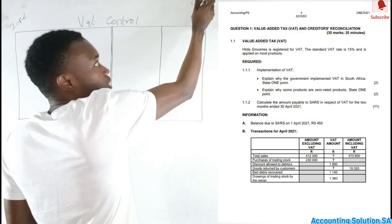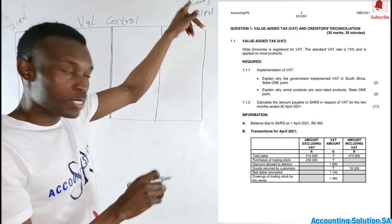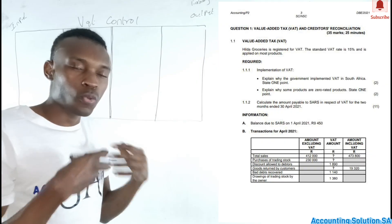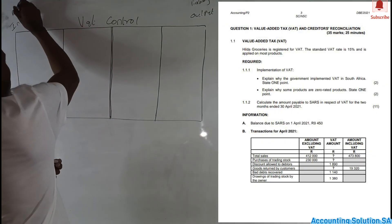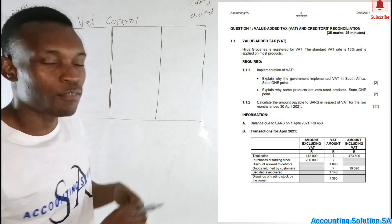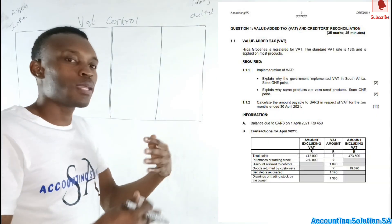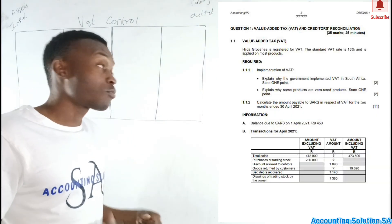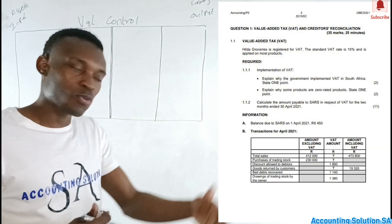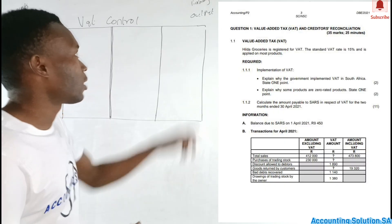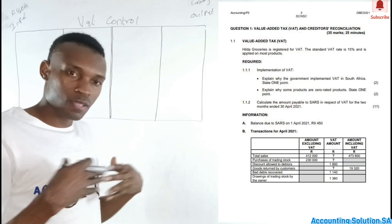Starting with the opening balance: it says the balance is due to SARS, not due to us, which means we owe SARS — so it goes on the credit side. The credit side is liability. If we receive cash we have to pay SARS, but if we spend money or purchase something it is an asset — we can claim VAT input. VAT input is the same as claiming — for example, we pay for merchandise and need a refund. VAT output means a customer purchases from us and we receive cash, so we must pay SARS.